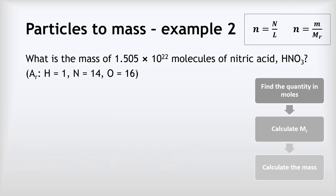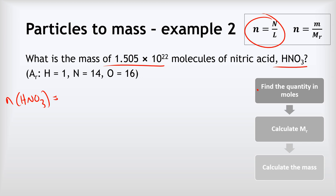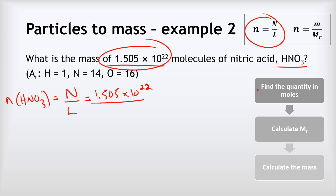Example two: what is the mass of 1.505 times 10 to the power of 22 molecules of nitric acid, HNO₃? We start by finding the quantity in moles using our first equation. The number of moles of HNO₃ equals the number of particles N divided by Avogadro's constant: 1.505 times 10²² divided by 6.02 times 10²³, giving an answer of 0.025 moles.